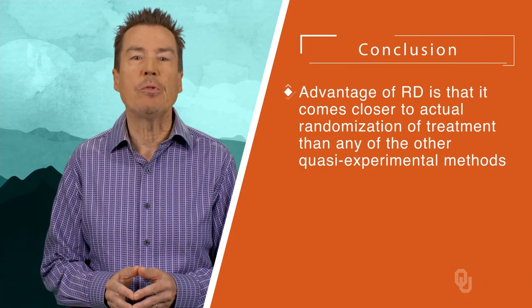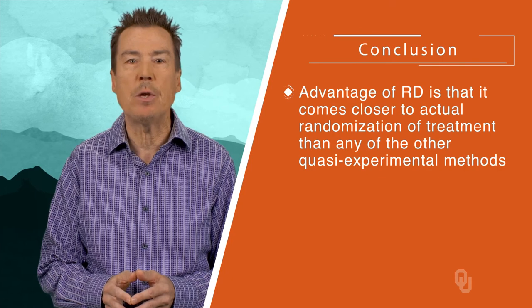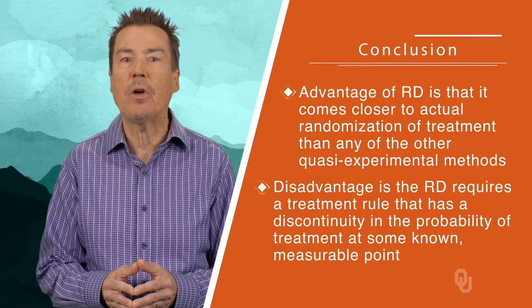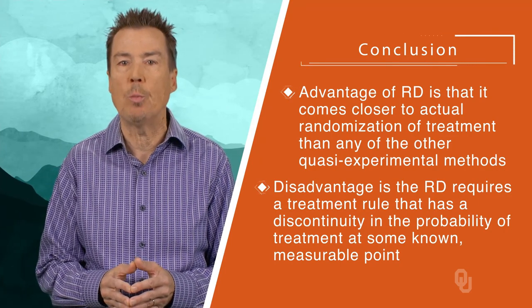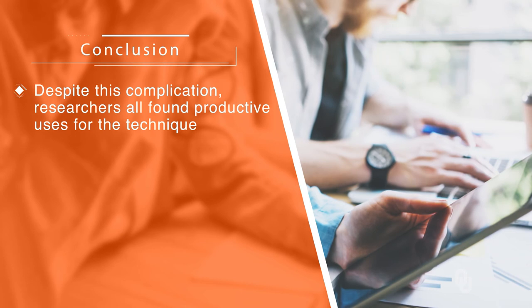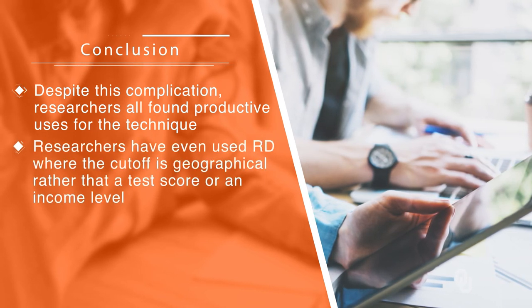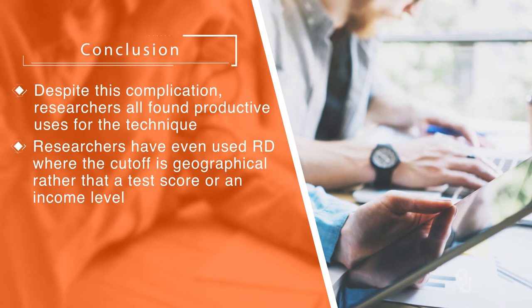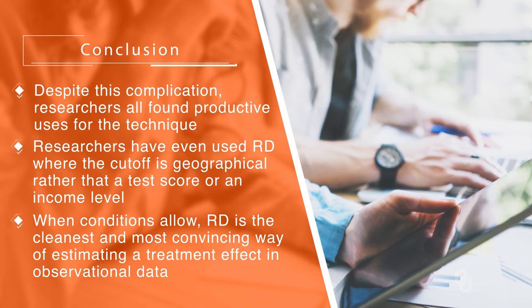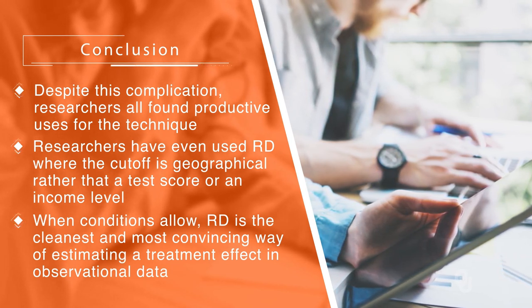The big advantage of RD is that it comes closer to actual randomization of treatment than any of the other quasi-experimental methods. The big disadvantage is that RD requires a treatment rule that has a discontinuity in the probability of treatment at some known measurable point. Despite this, researchers in health sciences, labor economics, development economics, and political science have all found productive uses for the technique. Researchers have even used RD where the cutoff is geographical. When conditions allow, RD is the cleanest and most convincing way of estimating a treatment effect in observational data. The major issues are getting the functional form correct in parametric estimation, and showing that results do not depend heavily on bandwidth choice in nonparametric estimation.